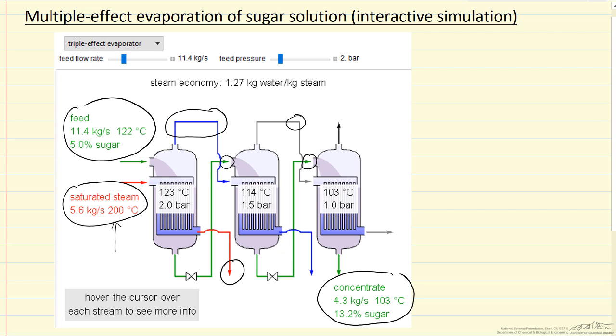We calculate a steam economy, which reflects the fact that instead of feeding fresh saturated steam in each stage, by using the steam created in the first stage, we get more net water evaporated from our sugar solution than steam we feed in. For these conditions, we feed one kilogram of steam and evaporate 1.27 kilograms of water from the solution.